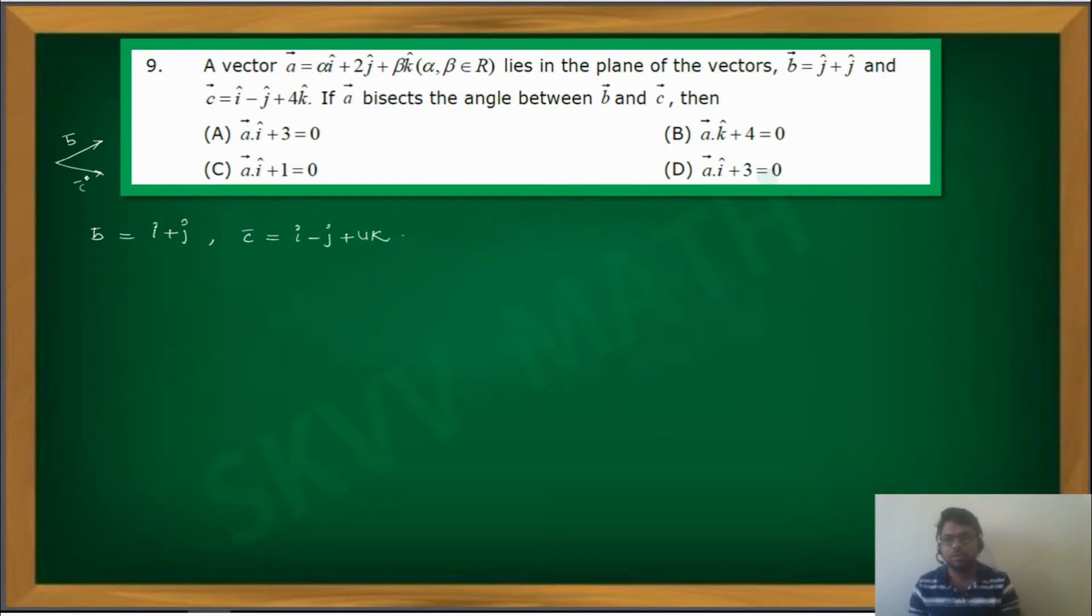If you have b bar and c bar, two vectors, maybe internal angular bisector. If you extend this b bar and c bar, maybe that is external angular bisector. So there are two possibilities here.